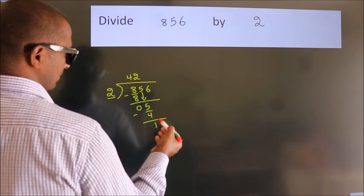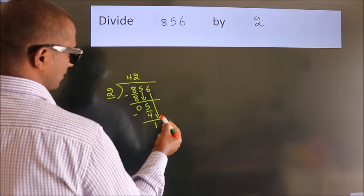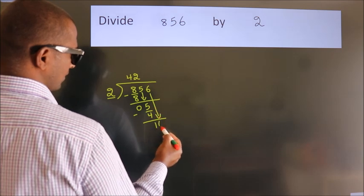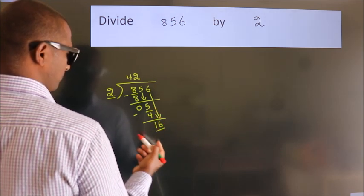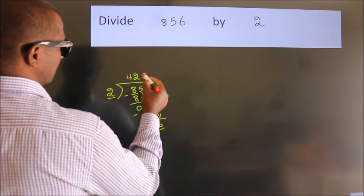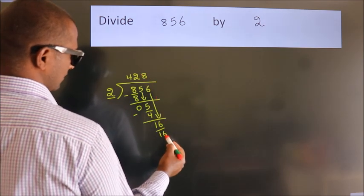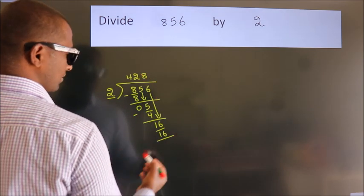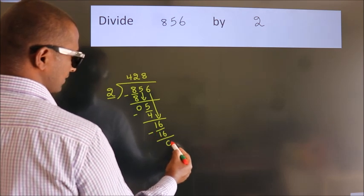After this, bring down the beside number, so 6 down, so 16. When do we get 16? In 2 table, 2 eights is 16. Now, we subtract, we get 0.